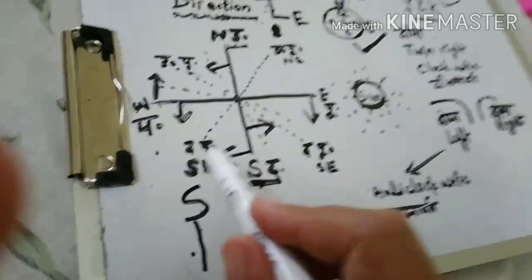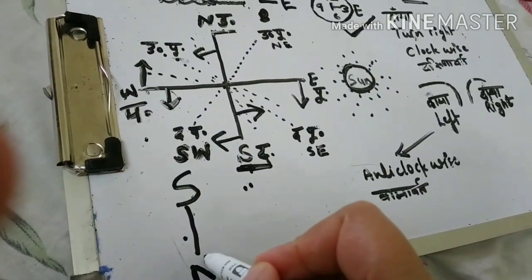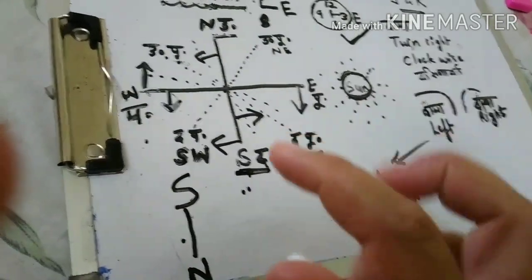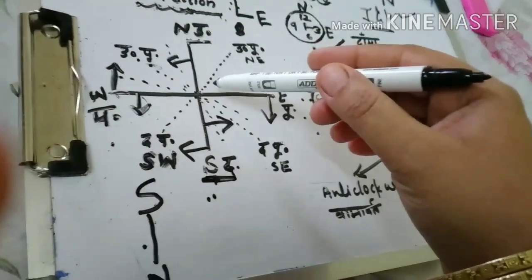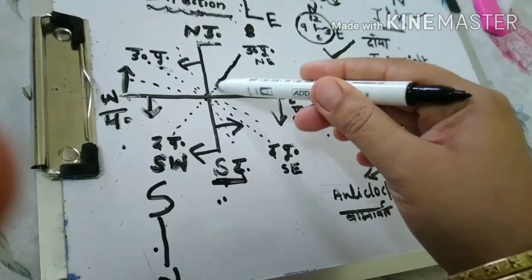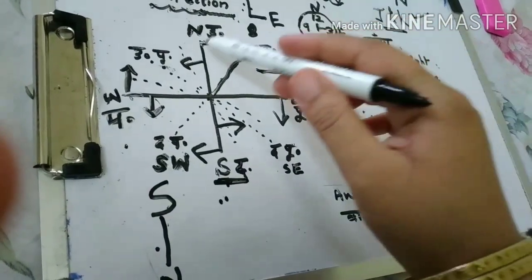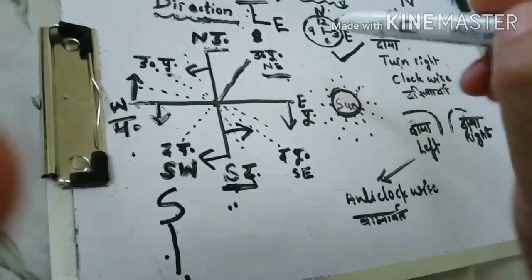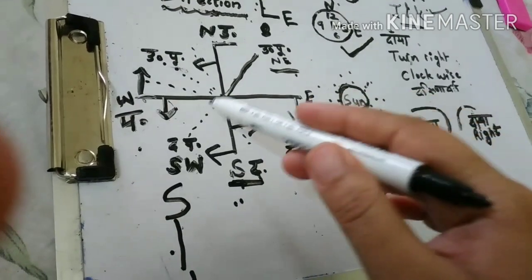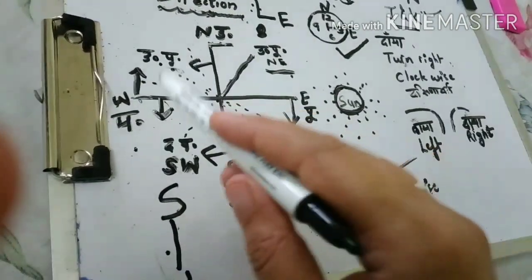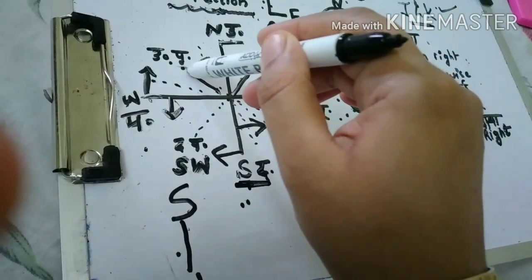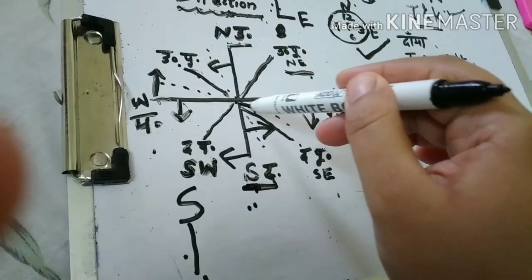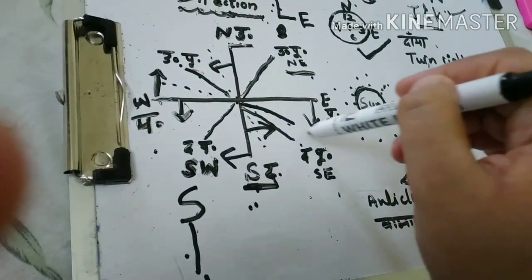Suppose in a question a direction is given as south - the opposite of south is always north, so you can solve without confusion. Sometimes it happens that you need to find a direction in the middle. The middle between north and east is always north-east. The middle between south and east is south-east, and between south and west is south-west.